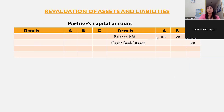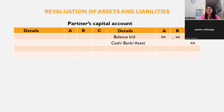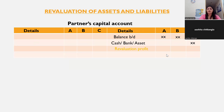In the partner's capital account, the first item is balance brought down — this is the opening capital balance from the trial balance. Then capital introduced by the new partner. If there is revaluation profit, it appears on the credit side distributed in old ratio. Revaluation loss appears on the debit side, also distributed in old ratio.